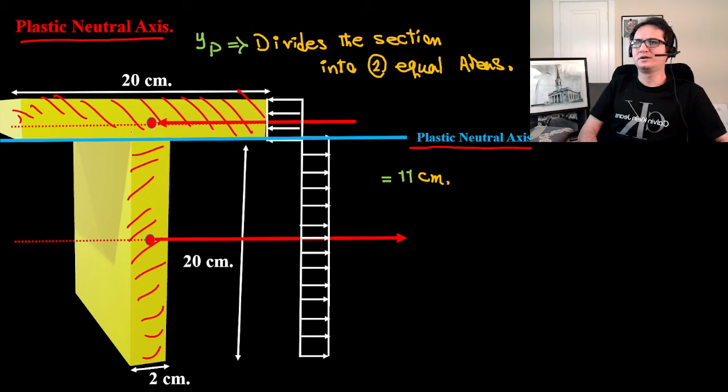The edge of the intersection from flange to web or web to flange is the plastic neutral axis, because that's exactly where the two areas separate from each other.